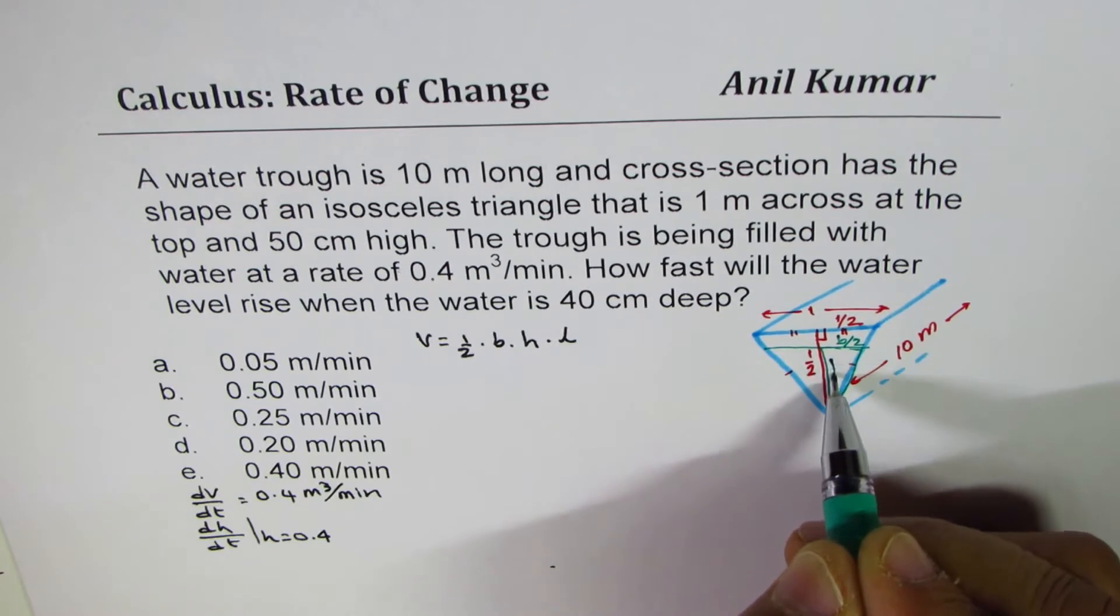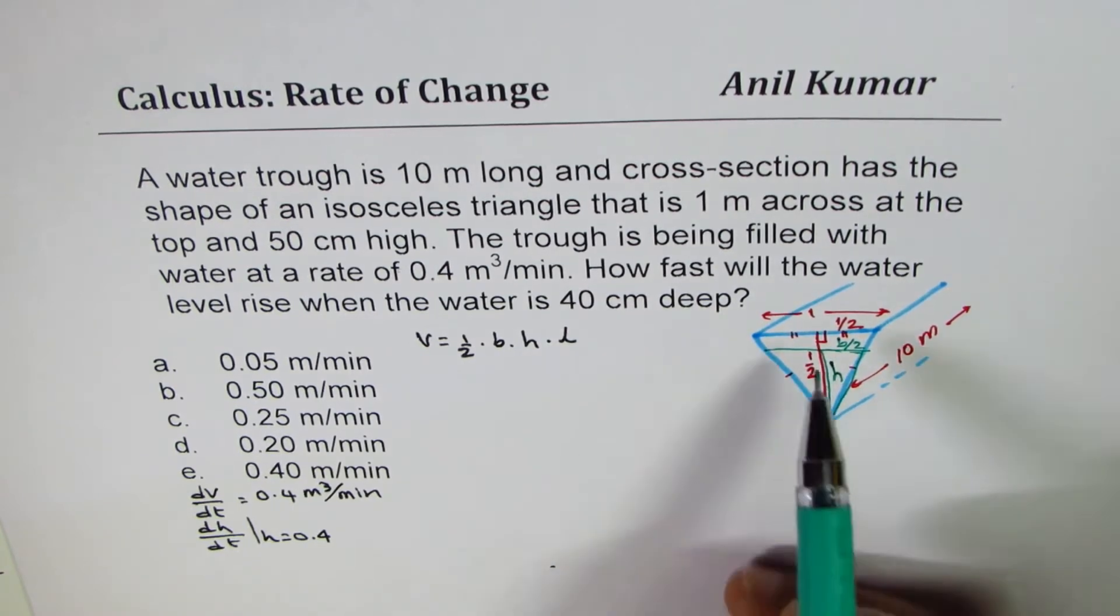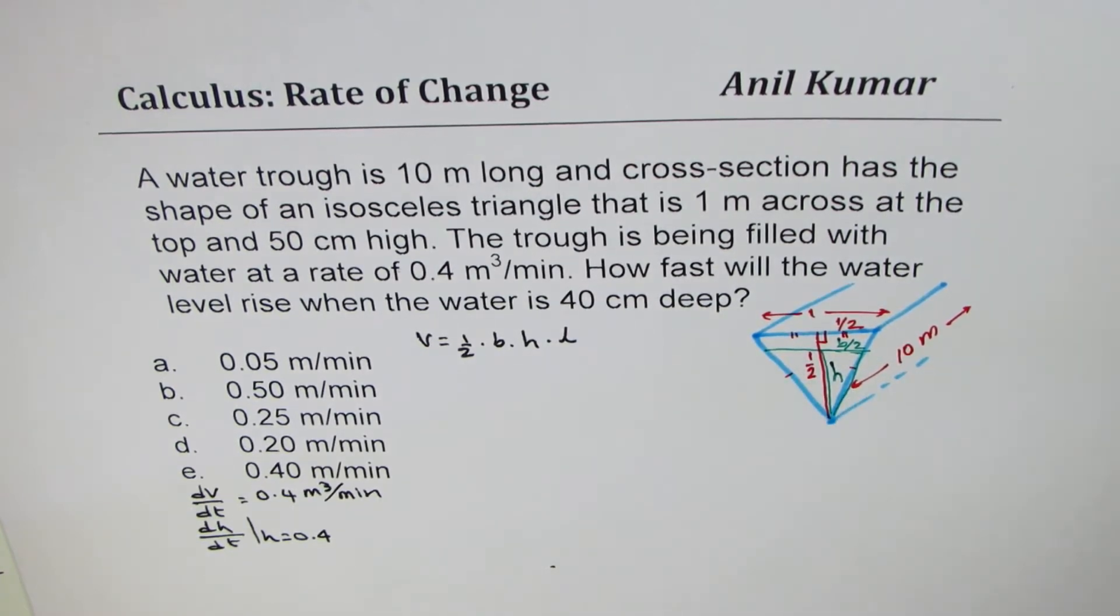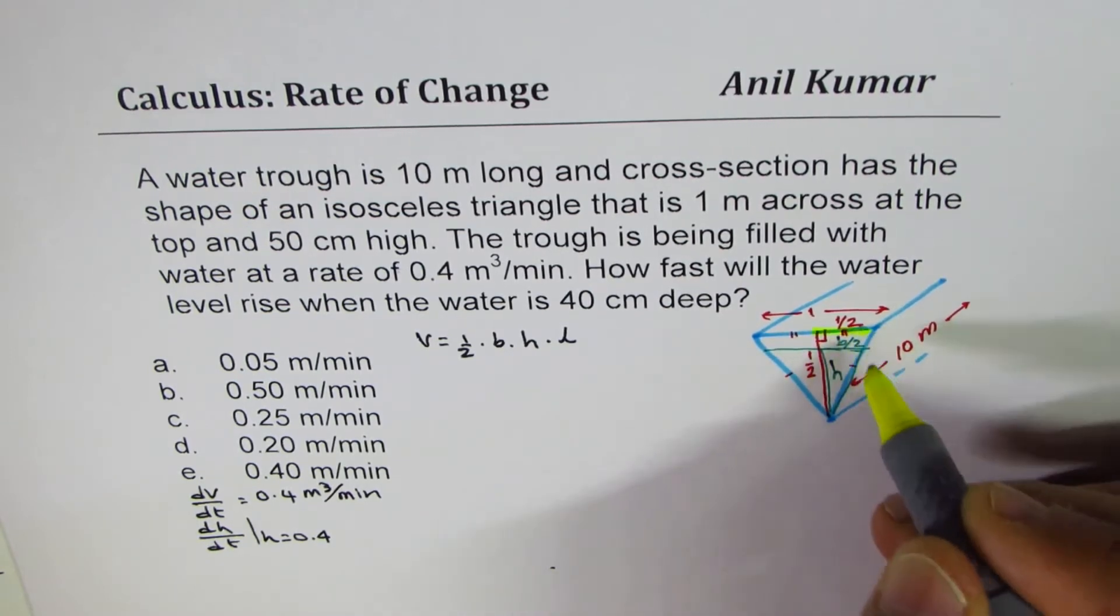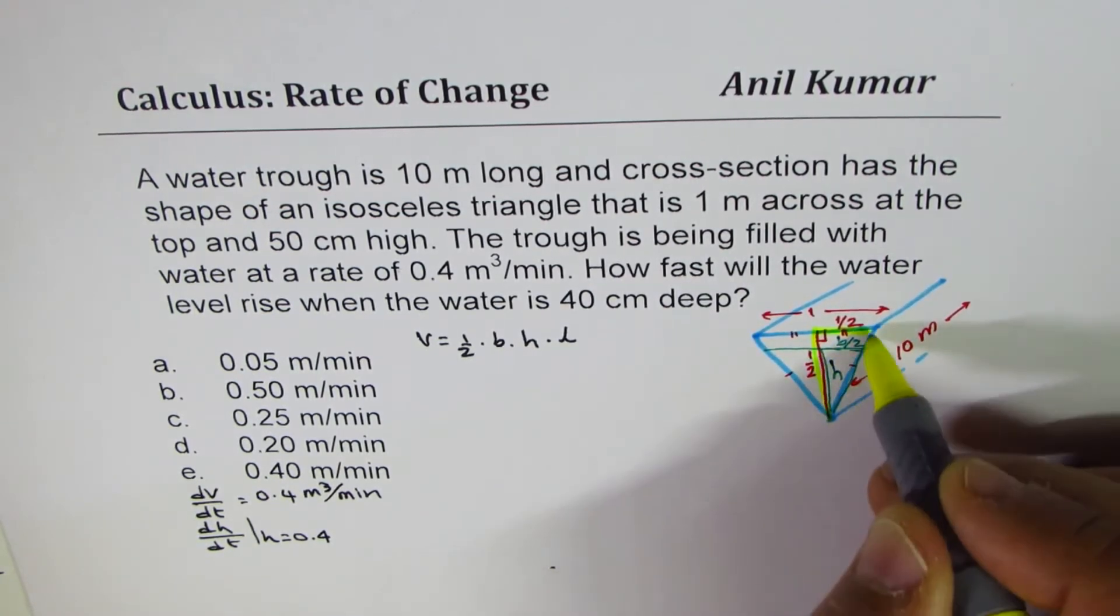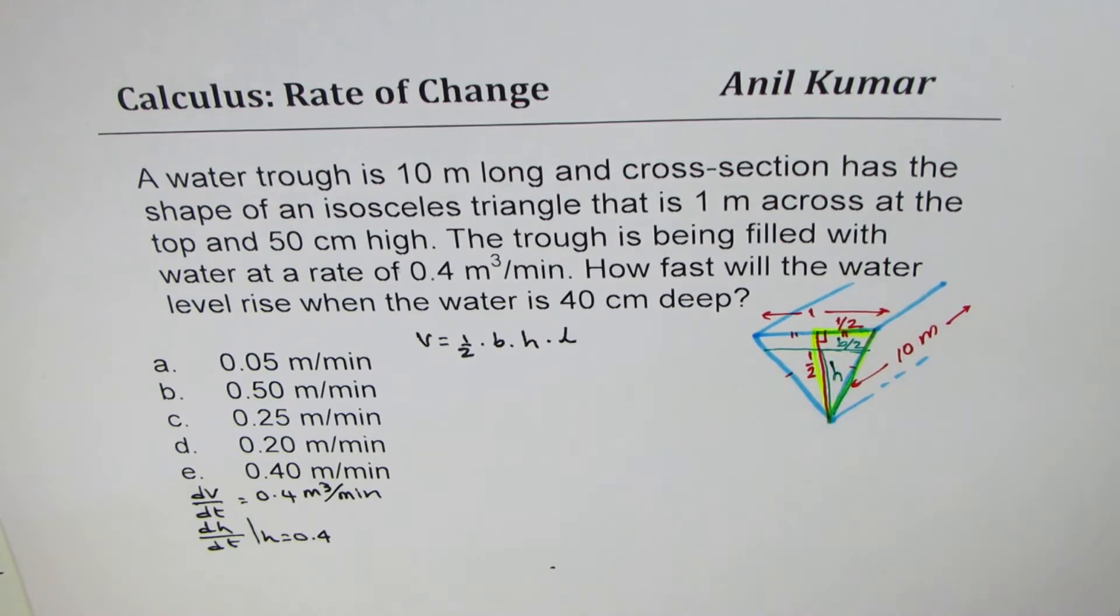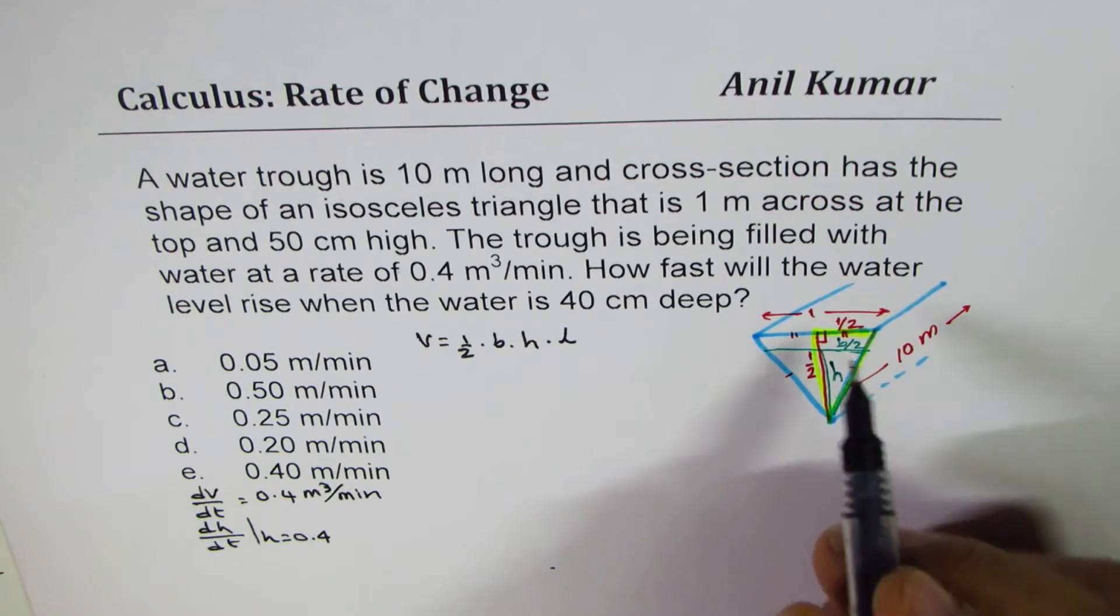Where h is the height. So what you observe here is that we have a right triangle, two similar right triangles. Ratio of the sides is constant. So we could relate them.